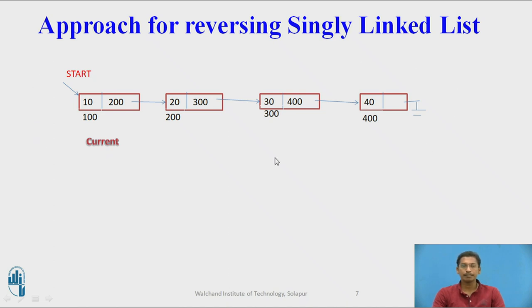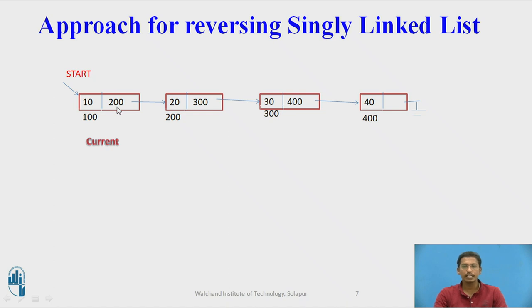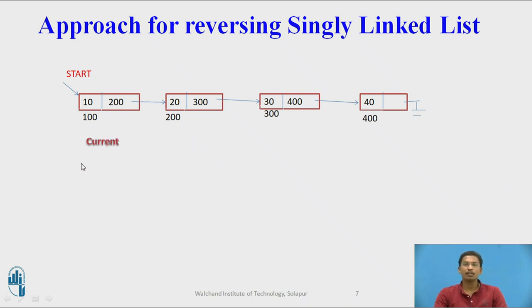Suppose the original linked list has four nodes: 10, 20, 30, and 40, with addresses 100, 200, 300, and 400 respectively. Node 10's next holds 200, node 20's next holds 300, node 30's next holds 400, and node 40's next holds null. Initially, current points to the first node (address 100) and previous is null, since there is no previous node at the start.